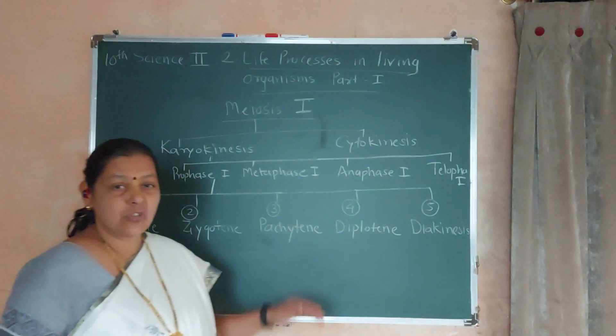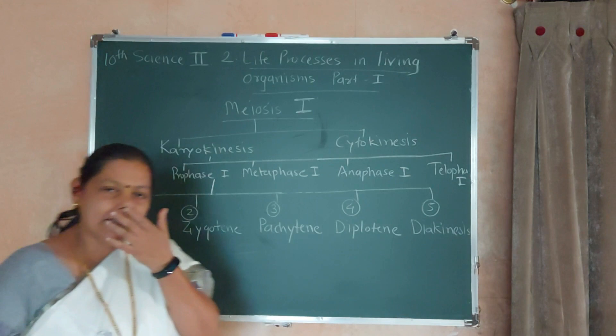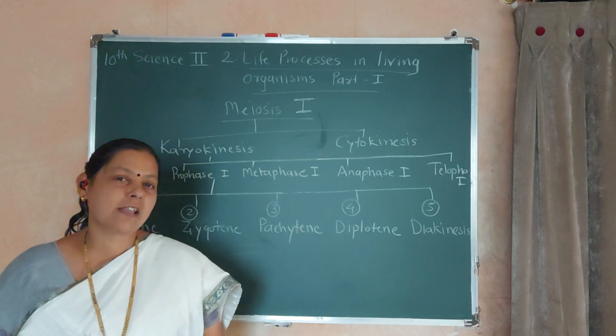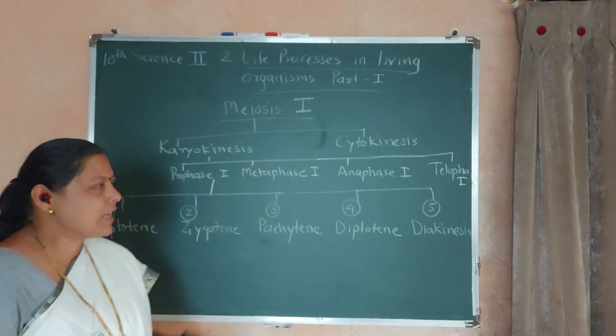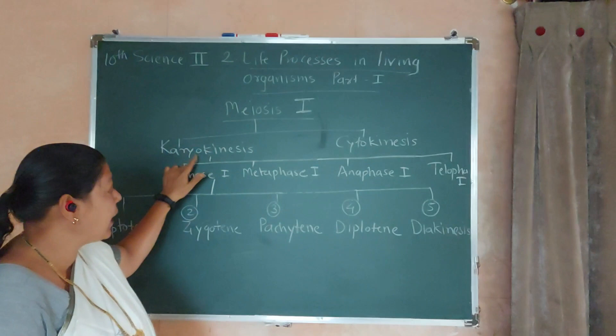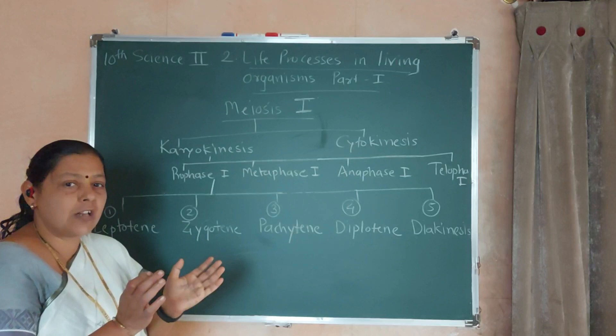We are continuing 10th science, science 2, topic 2nd: meiosis. We have already discussed about meiosis. In meiosis, there are 2 steps involved: meiosis 1st and meiosis 2nd. Now we will discuss meiosis 1st. In meiosis 1st, there are karyokinesis and cytokinesis.